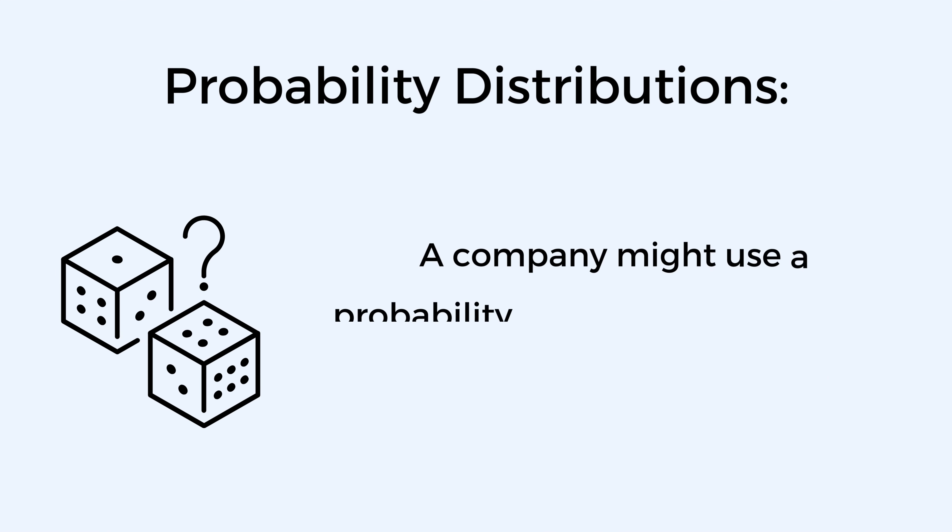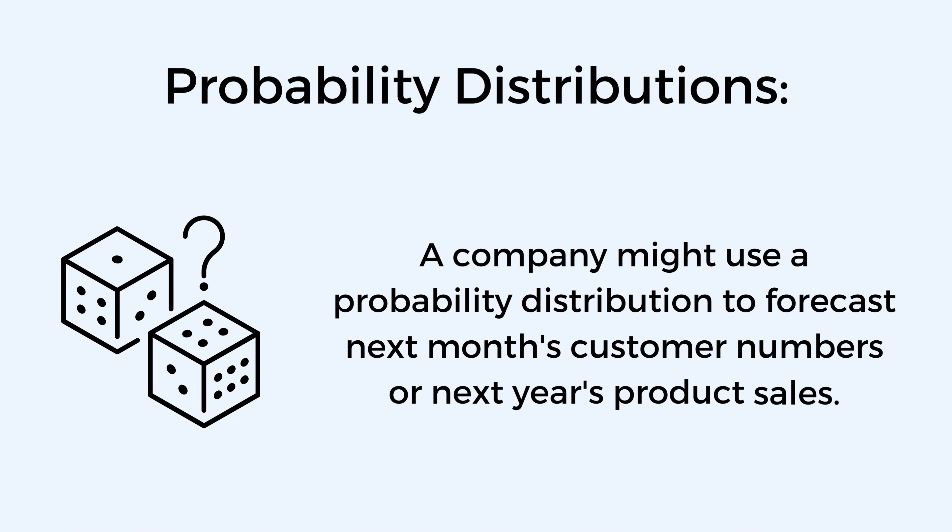Probability distributions describe the likelihood of different outcomes. Common examples are the normal distribution, binomial distribution, and Poisson distribution. They are indispensable for making predictions about future events. For instance, a company might use a probability distribution to forecast next month's customer numbers or next year's product sales.